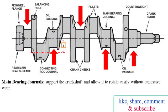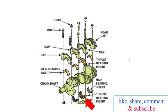This is the line diagram of a four-cylinder inline engine crankshaft. Let's start with the main bearing journal. It supports the crankshaft and allows it to rotate easily without excessive wear. The number of cylinders usually determines the number of main bearings. The four-cylinder inline engine usually has five main bearings. Thrust loads are forces that push and pull the crankshaft forward and rearward in the engine block. A thrust bearing supports the load and maintains the front-to-rear position of the crankshaft in the engine block.